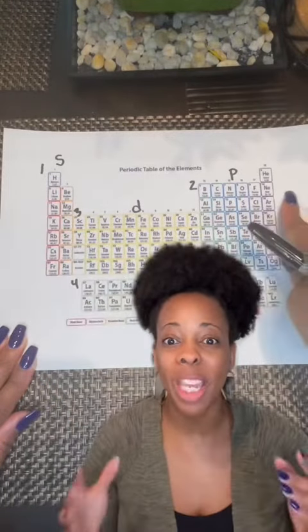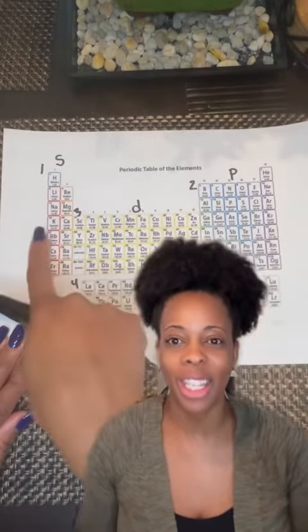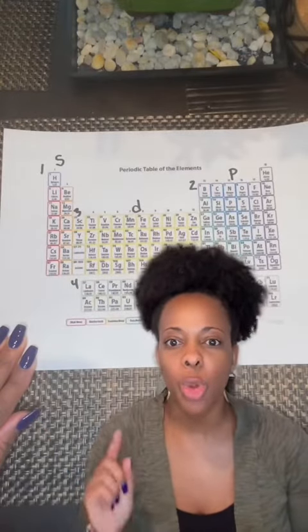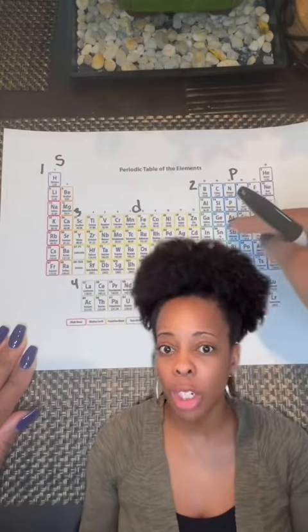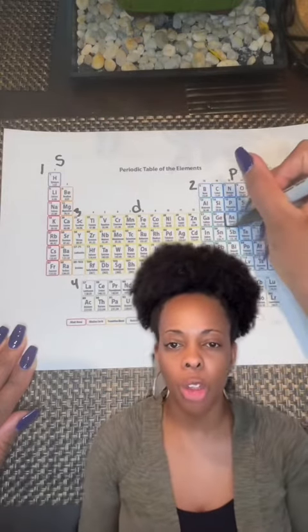So those numbers are going to be your guiding light to help you get these right. The ones are telling you what number, what energy level you're starting on, and then the letters tell you what subshell you list. You would then count your columns along the way and write down everything you've passed.